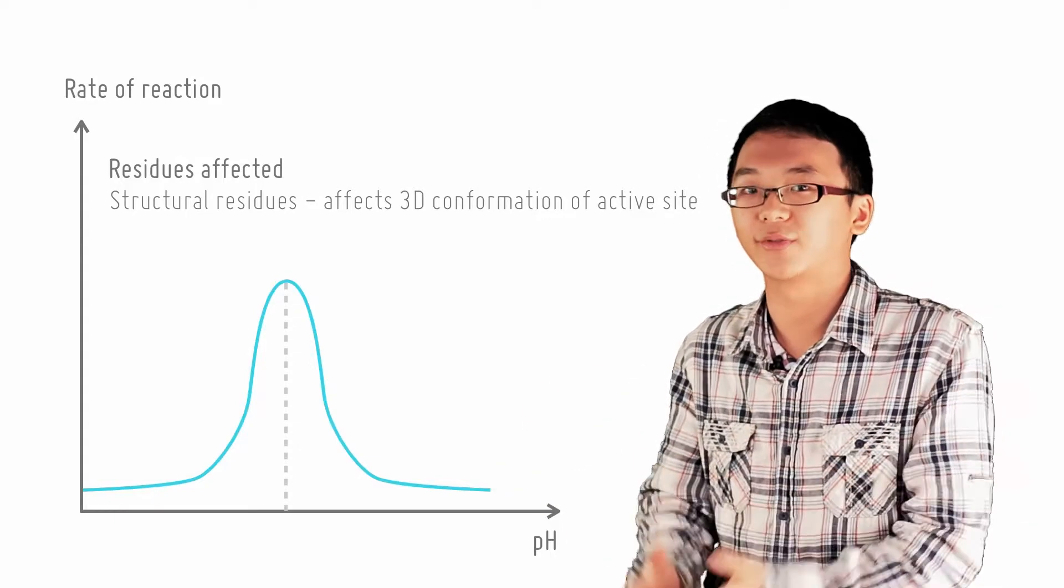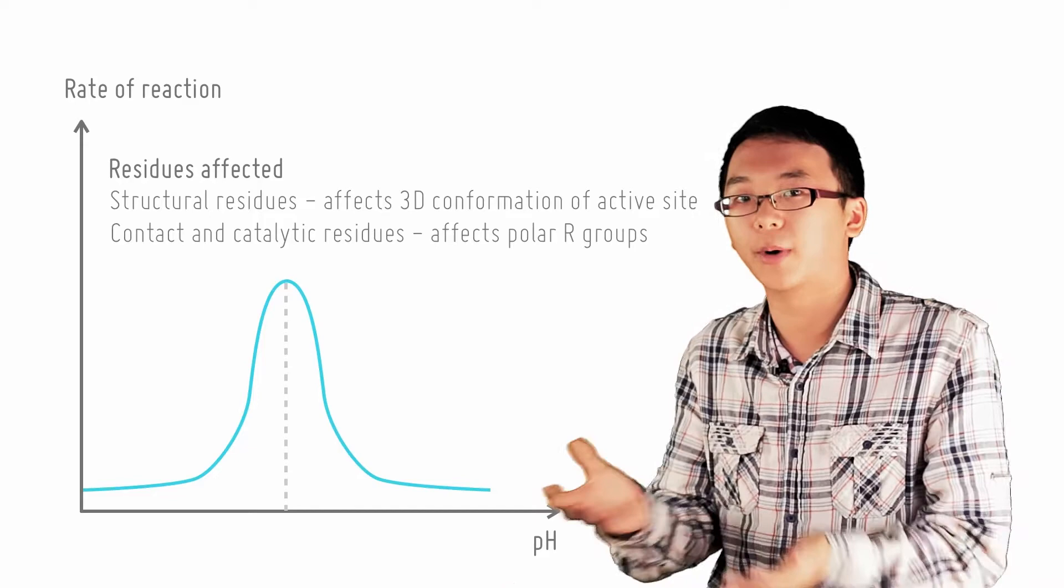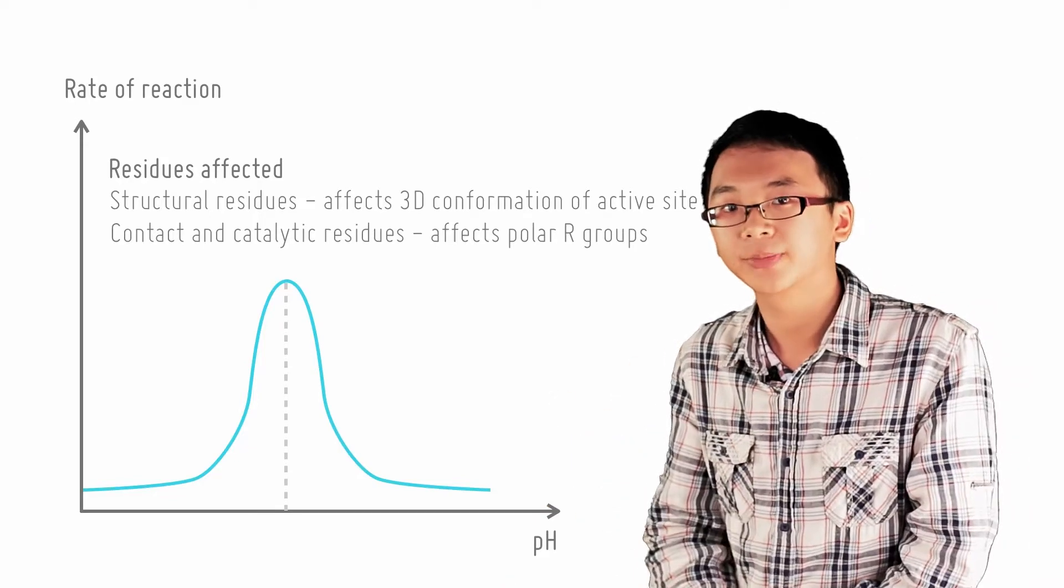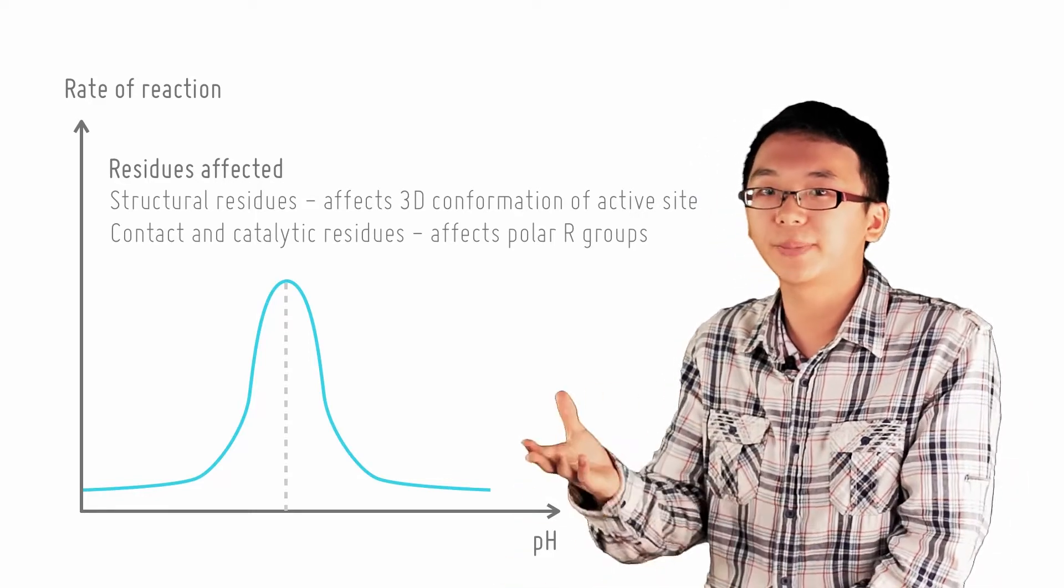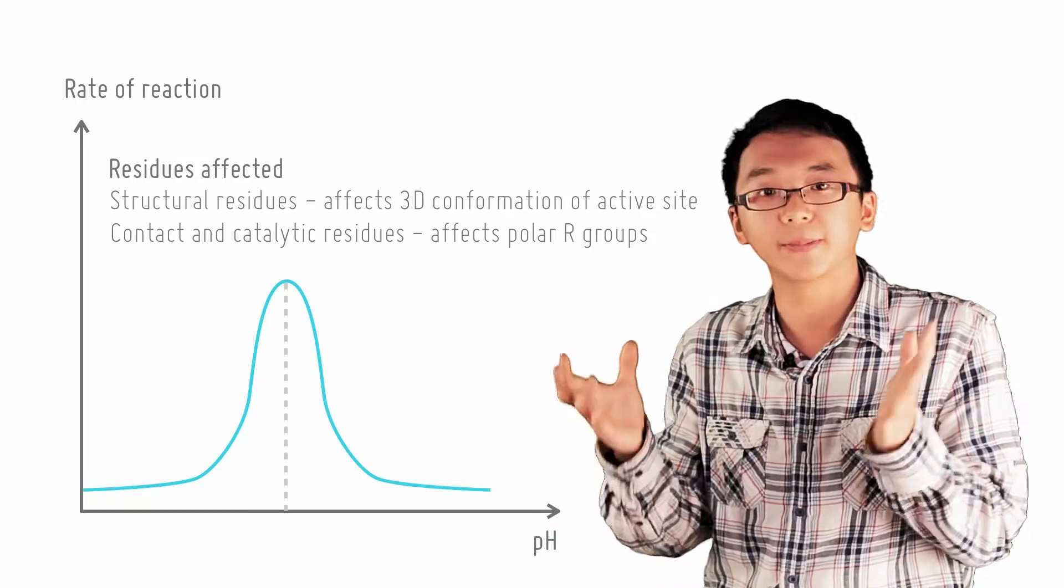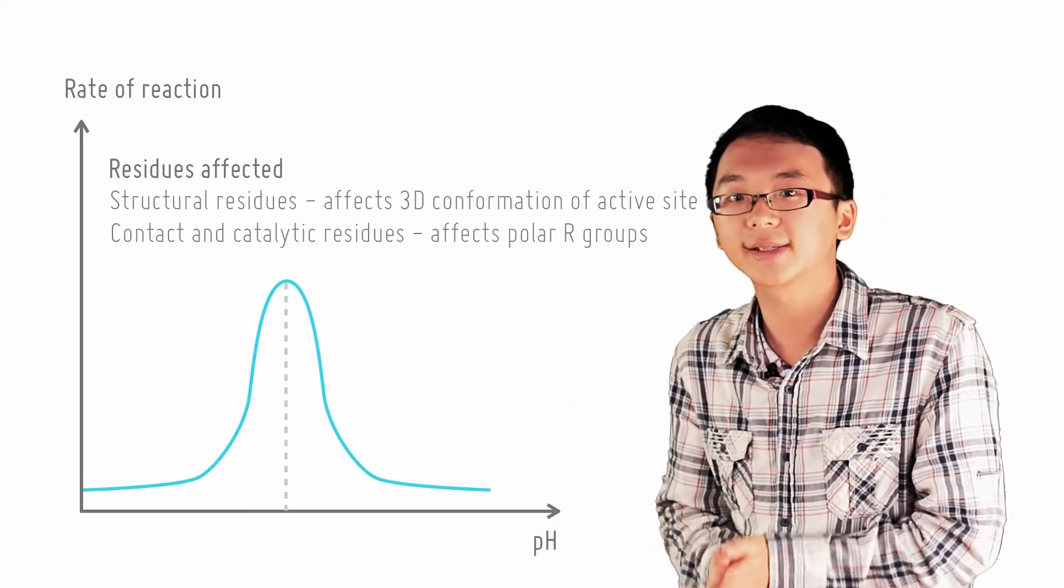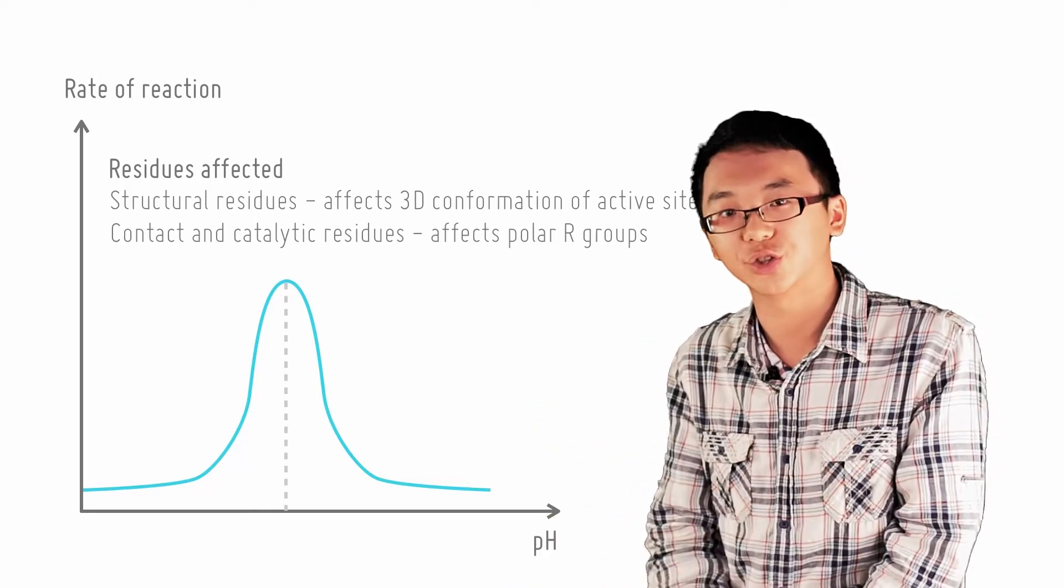For contact and catalytic residues, they may require charges in order to form weak ionic bonds with the substrate to allow binding. Alkaline pH will cause positively charged R-groups to lose their charge due to acid-base neutralization. The enzyme can no longer carry out the enzymatic reaction and the rate of reaction decreases.